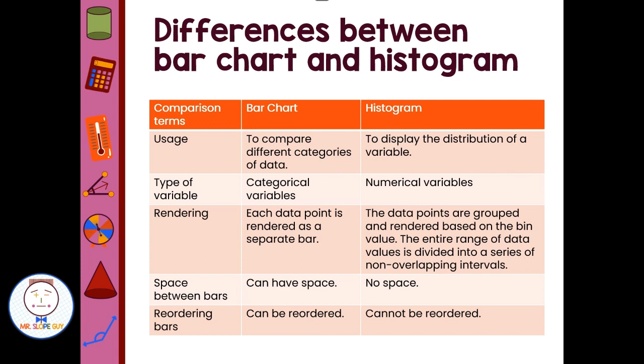The types of variables differ slightly. We have categorical values that are used for a bar chart, like if we're looking for how many people with dogs or cats, different categories. Where histograms, we're talking about numerical variables.